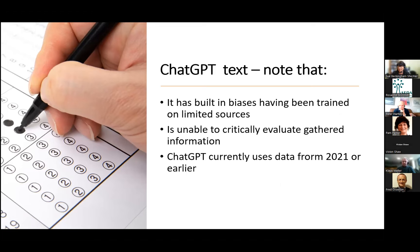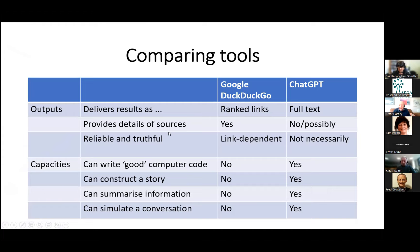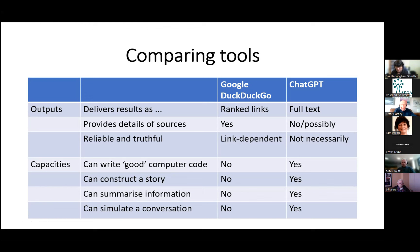One important thing to remember: the current free version only has data up to 2021 — that's when they compiled all the information, and when they're going to update it is yet to be seen. Bing is essentially more up to date. How will ChatGPT respond? I'm assuming they'll be able to scan the internet live very shortly — that's a particularly important difference at the moment. This is just a comparison of tools: conventional internet search gives you links, whereas ChatGPT gives you text and has additional facilities you don't get with a conventional Google search.